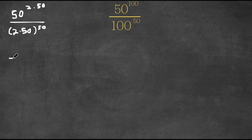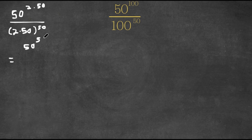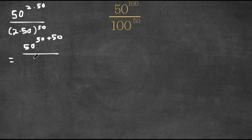Now this is going to equal 50 to the power of 2 times 50, which is simply equal to 50 to the power of 50 plus 50. Now we're going to divide this by 2 times 50 to the power of 50, which would equal 2 to the power of 50 times 50 to the power of 50.